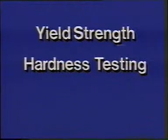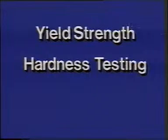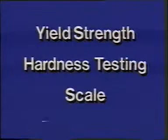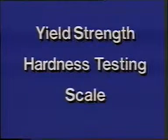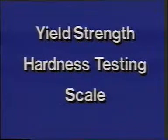Yield strength occurs at the point where the stress-strain curve becomes no longer linear. Popular methods of hardness testing include Brinell, Rockwell, Vickers, and Knoop tests. Hardness can be an indication of a steel's tensile strength. Hardness testing can be performed on a macro scale to determine hardness of a group of grains, or on a micro scale to determine hardness in just a single grain.